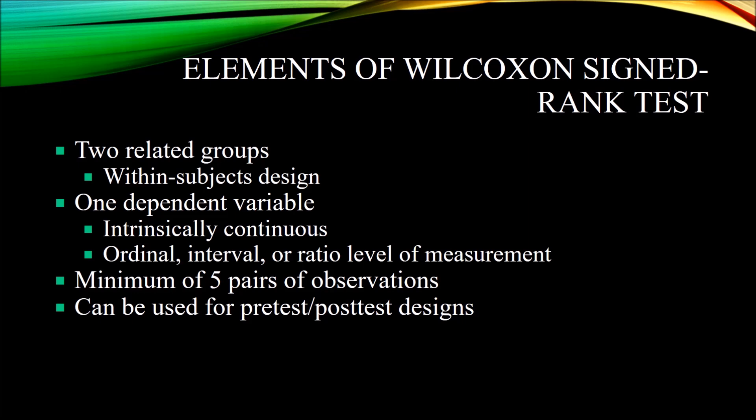The ordinal level of measurement is thought of as ranked — for example, first place, second place, and third place in a race. You know the rank, but you don't know the distance between the first, second, and third place finishers. We sometimes think of Likert scales as ordinal as well, although sometimes they are treated as interval.